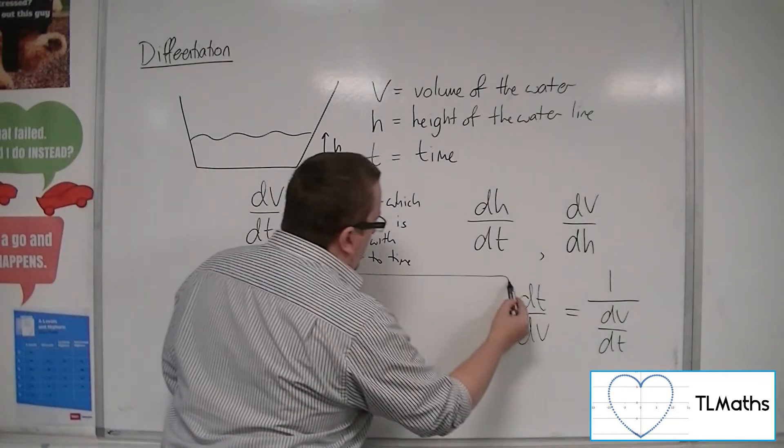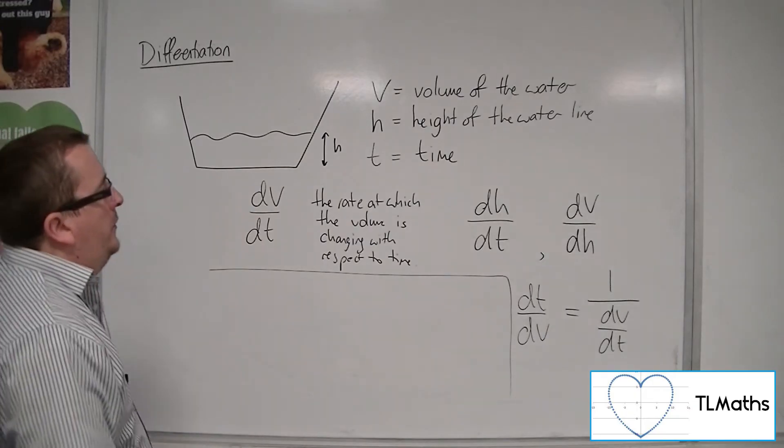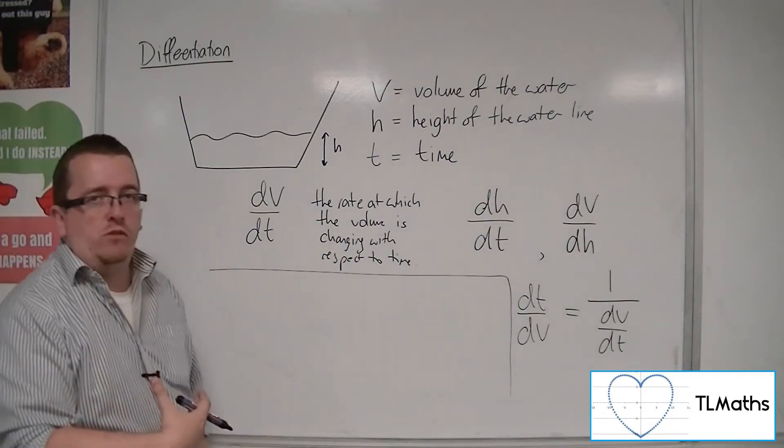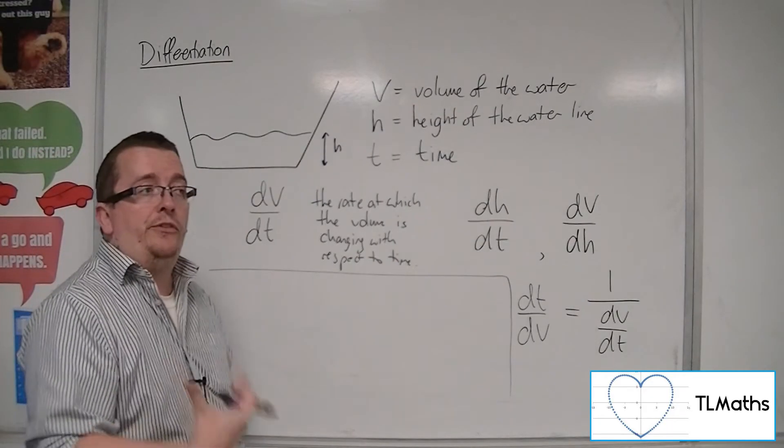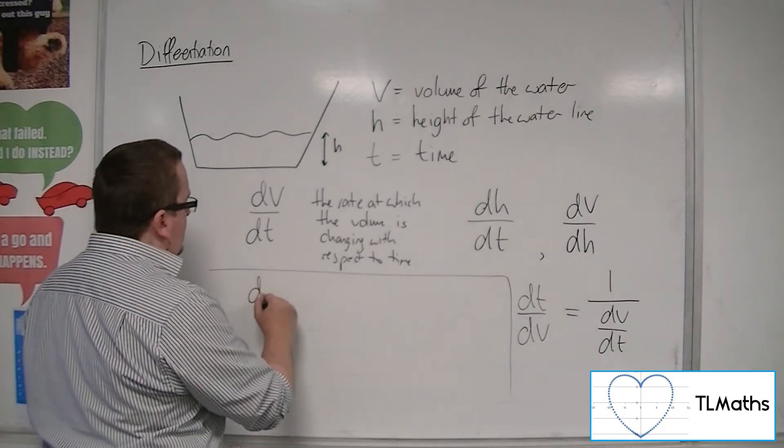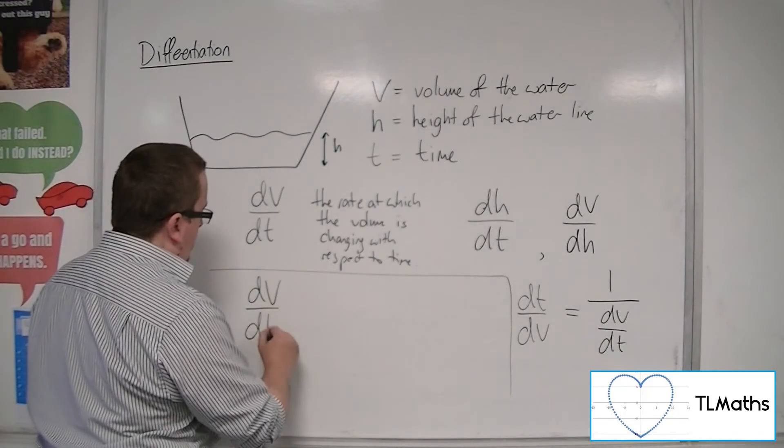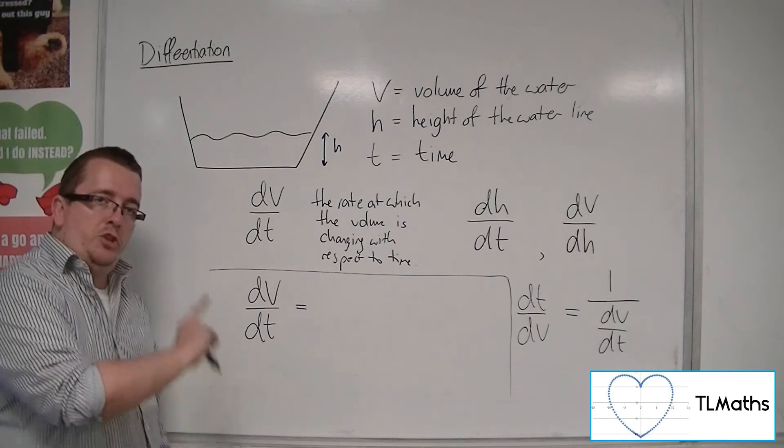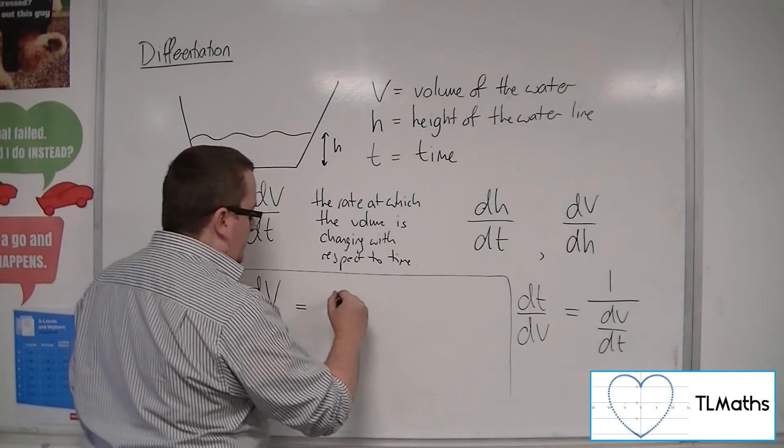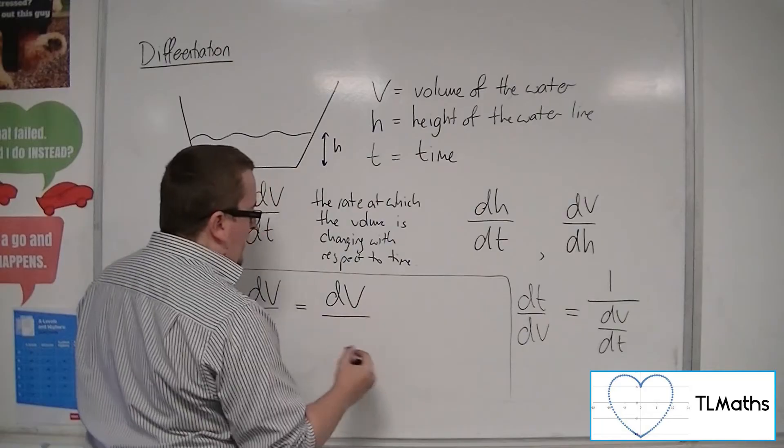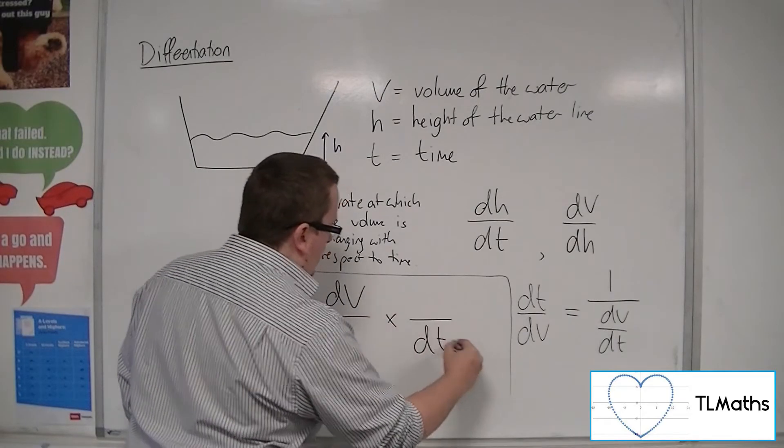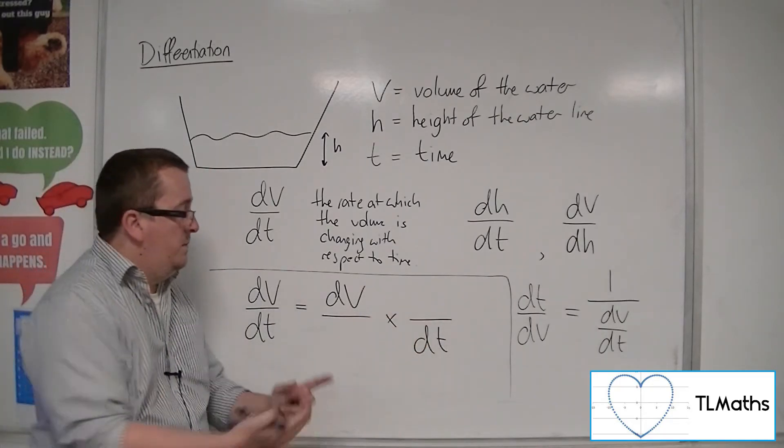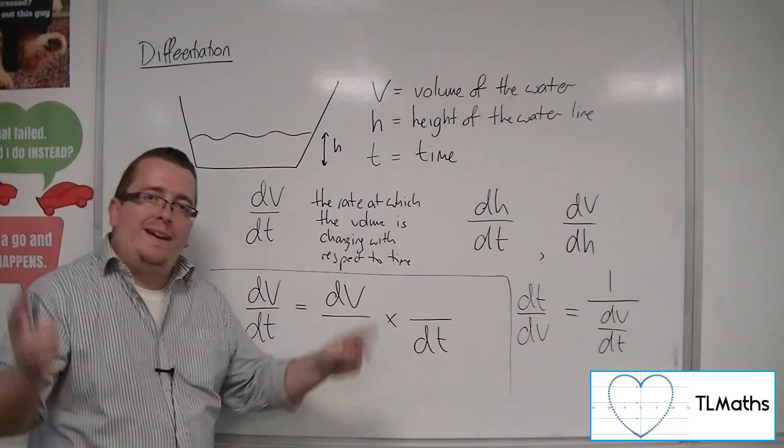So we've got these pieces. What you need to be aware of is that we can use the chain rule to construct an equation that will allow us to solve these types of problems. If I needed to find dV/dt, then what I can do is I can set up the chain rule so that if I had dV there and I had dT there, I just need to place another variable here that will effectively, in fraction terms, cancel out.